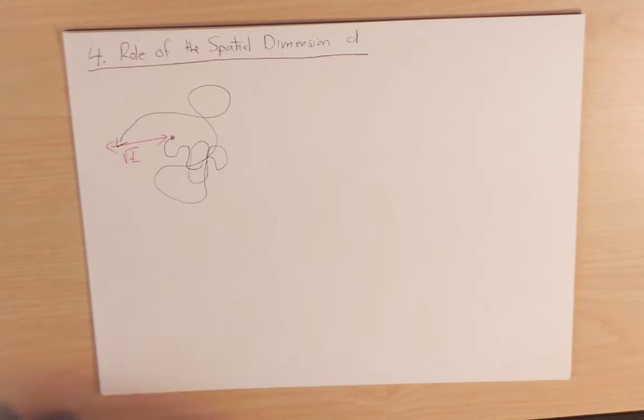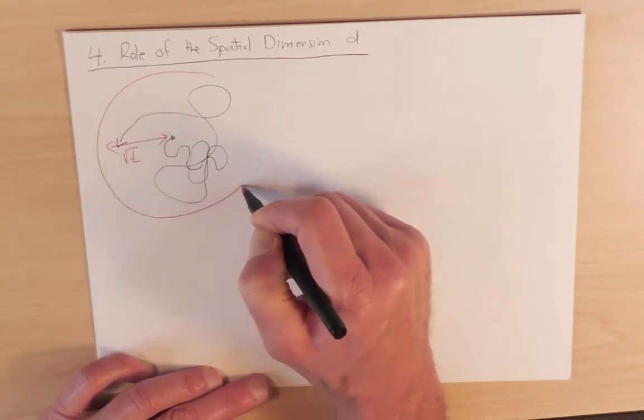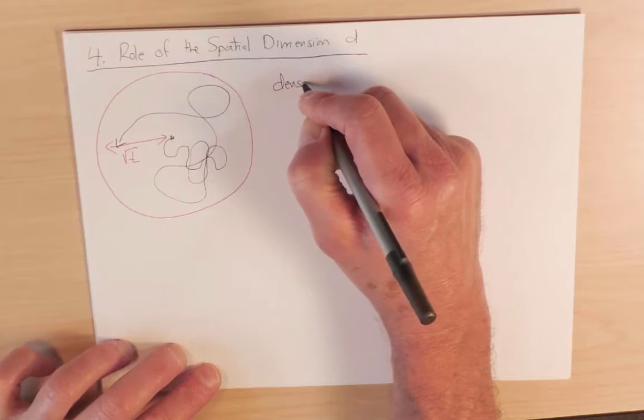So we can define an exploration sphere as the range over which a typical random walk can be expected to extend up to time t. And let's now calculate the density of points visited inside this exploration sphere.